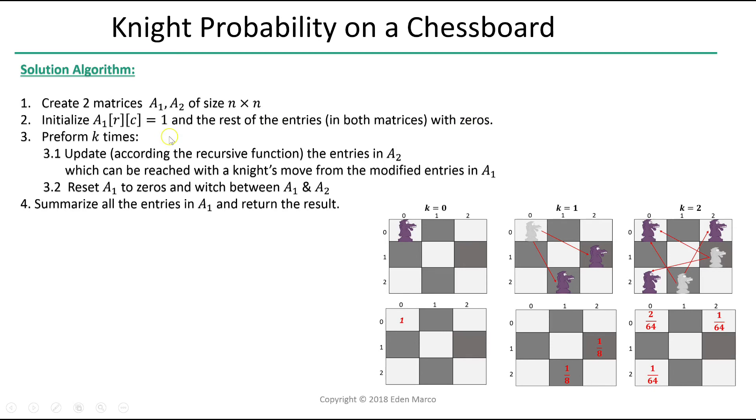In the third step, we are performing exactly what we did in the example while remembering the results of our computations. We are executing k times the following: We update, according to the recursive function, the entries in A sub 2, which can be reached with the knight's move from the modified entries in A sub 1. And then we reset A sub 1 to 0s and switch between A sub 1 and A sub 2.